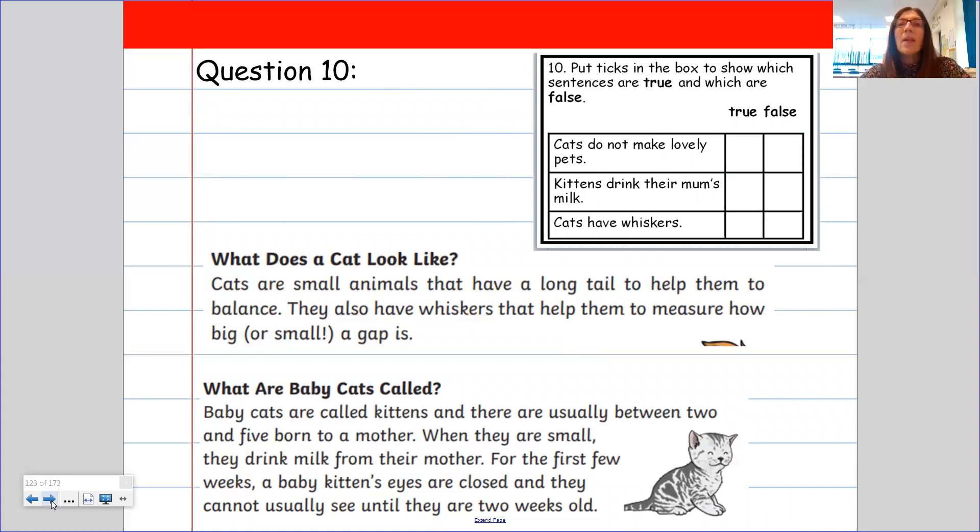Now, question 10 is we have to say whether these statements are true or false. So put ticks in the box to show which sentences are true and which are false. So cats do not make lovely pets. So what I'm going to get you to do is pause the video and have a look through, read the text and see if you think that is true or false. Brilliant. So hopefully you would have said that it is false, because actually cats do make lovely pets.